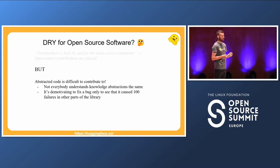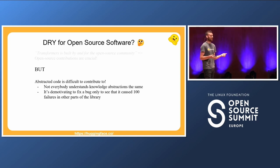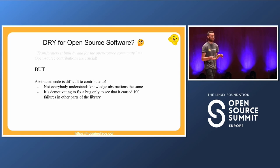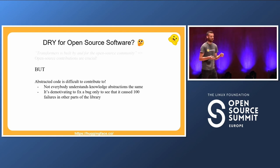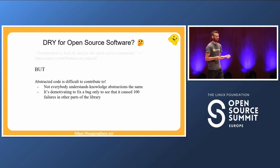Not everybody understands abstractions the same way. There are a lot of discussions about what different things mean in machine learning. For example: natural language processing, natural language understanding, natural language generation — how do they relate to each other? People understand that differently. Self-attention is a mechanism most ML models are now built upon, but there have been new improvements — flash attention, chunked attention, long sequence attention, cross attention. How do you bring all these into one abstraction? Very difficult to define, so we don't want to define that.